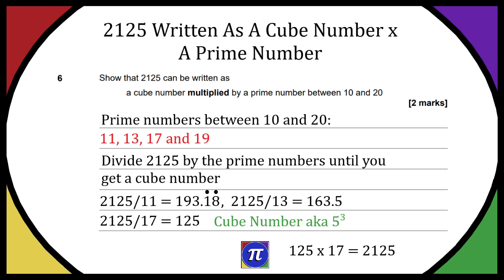So just as a little check, we can do 125 times 17 and that's going to be equal to 2125.